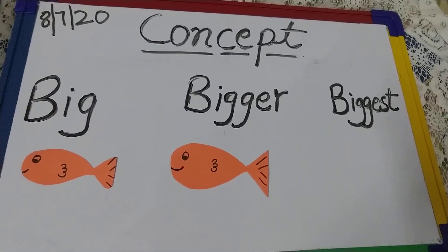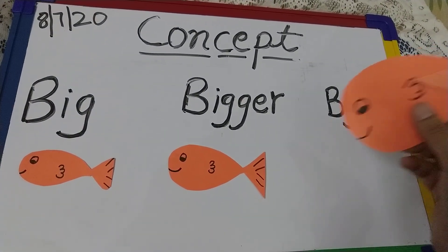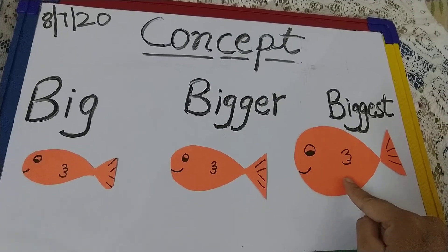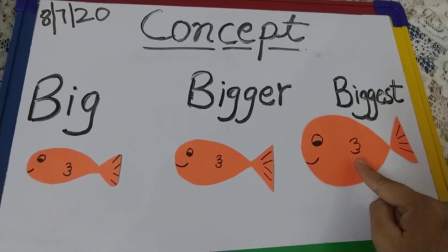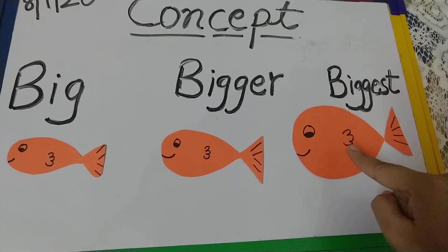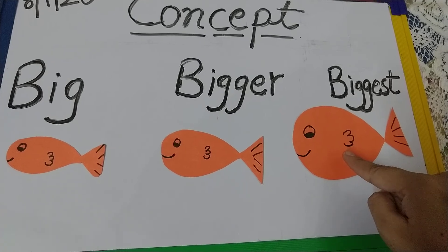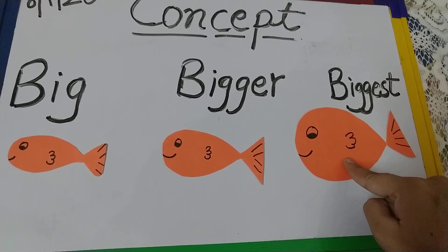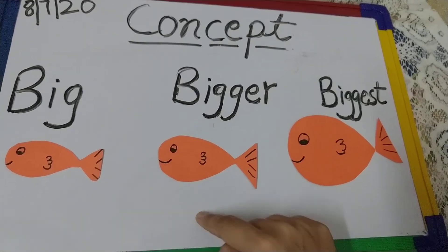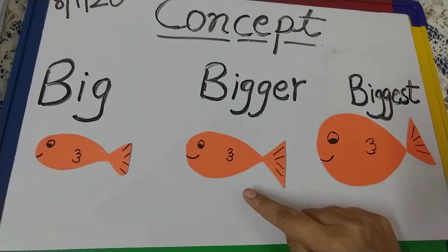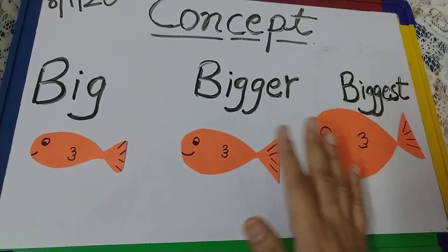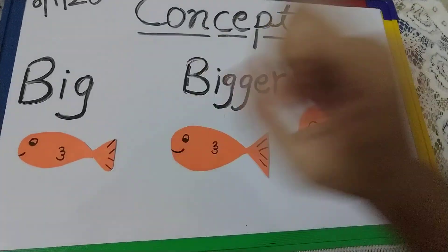Now I have a very big fish. So what should I call it now? I will call it the biggest fish. It is the biggest fish of them all, because this fish is bigger than this fish and this fish.